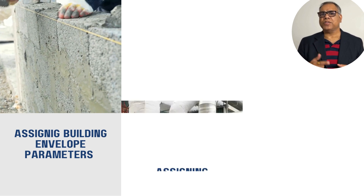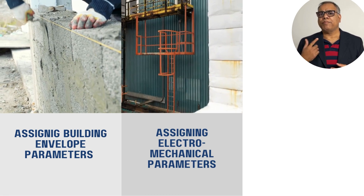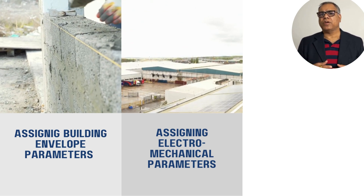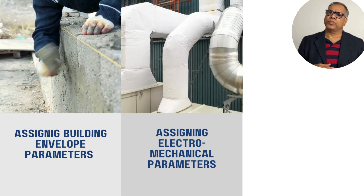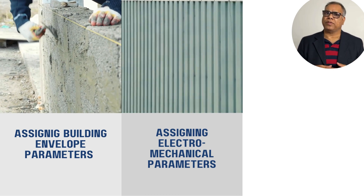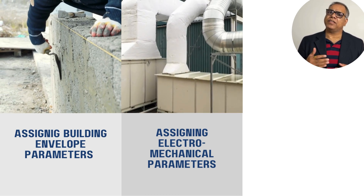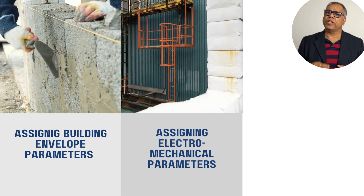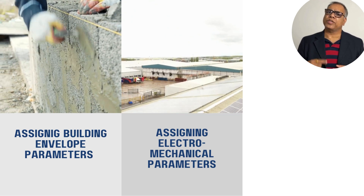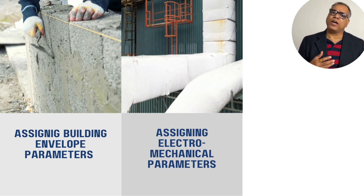Assigning the properties of all materials of the envelope is an equally important task. Once the building envelope properties are assigned, you also have to assign properties of other elements, which include the HVAC systems, MEP systems, lighting systems, occupancy — number of people operating — and schedules. All these things are explained and assigned in real case studies using a step-by-step method.